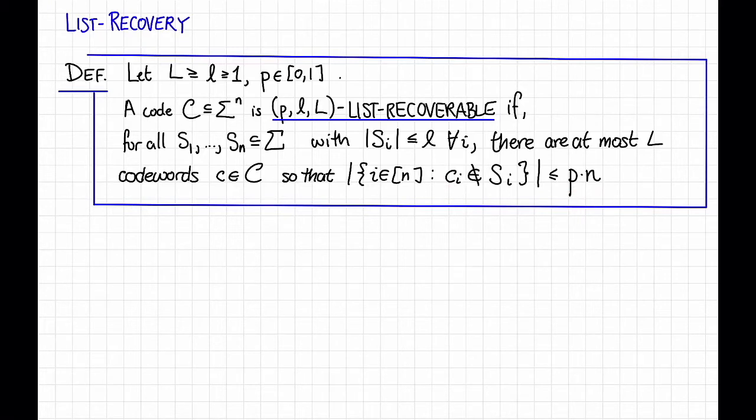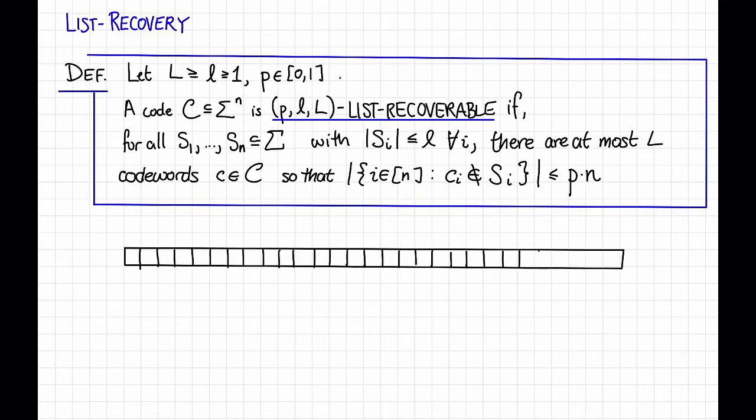To parse this, let's see a picture. So imagine that this is a codeword C in our code C. We don't know what it is, all we know is that it's in the code. However, what we do know is some information about where each of the symbols live. Like we know that the first symbol here, C1, is in some list S1. Let's say it's either A or B or C.